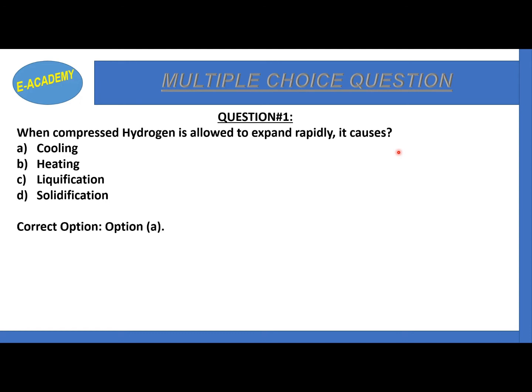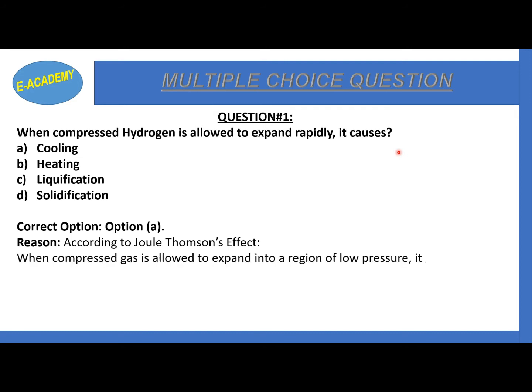The correct option is A - cooling. The reason is that when compressed gas is allowed to expand rapidly, cooling occurs. According to the Joule-Thomson effect, when compressed gas is allowed to expand into a region of low pressure, it gets cooled. So cooling is produced.